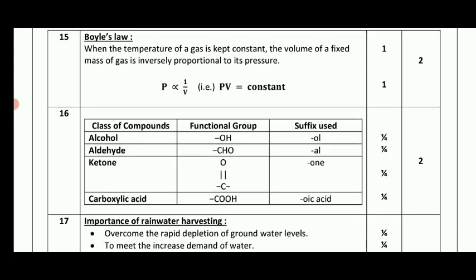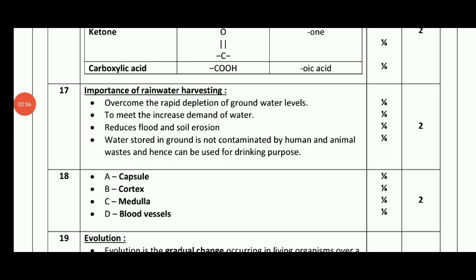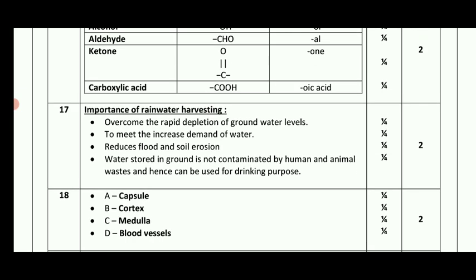The next one is the importance of rainwater harvesting. If you write it down, you can get the mark. Points include: overcome the rapid depletion of groundwater levels, meet the increased demand of water, reduce flood and soil erosion, and water stored in the ground is not contaminated by human and animal waste, hence it can be used for drinking purposes.